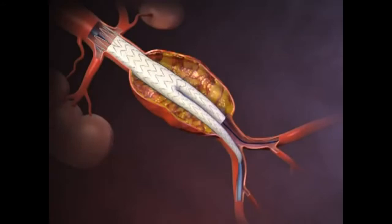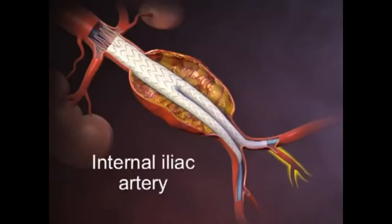The contralateral limb component of the stent graft is then introduced and deployed with overlap sufficient to prevent leakage around the junction of the main body of the device and the proximal end of the limb, and so that the distal end of the contralateral limb is located superiorly to the internal iliac artery.